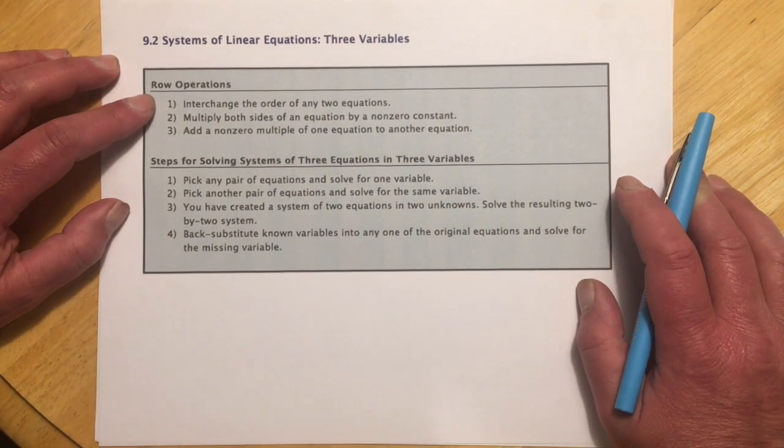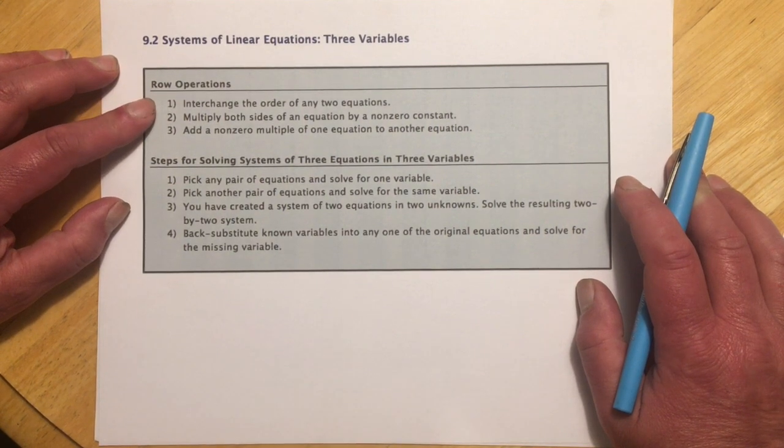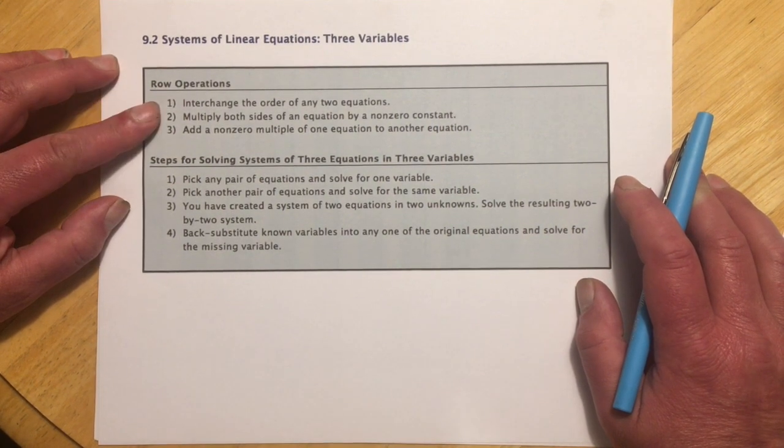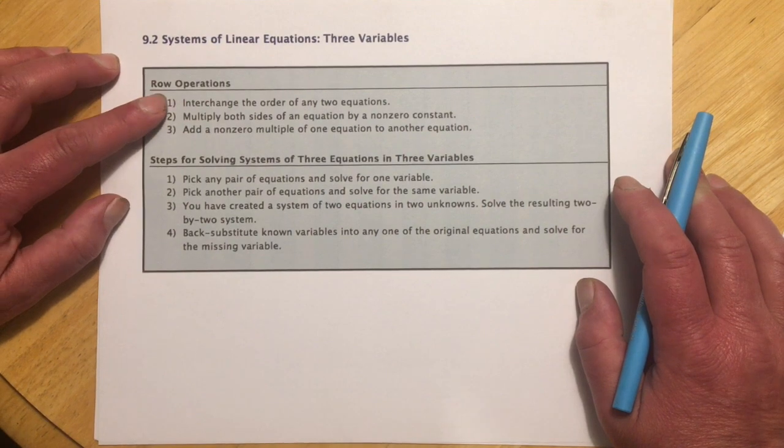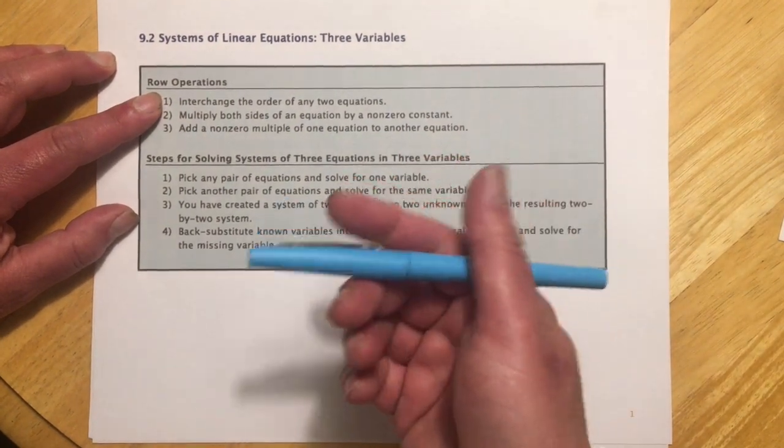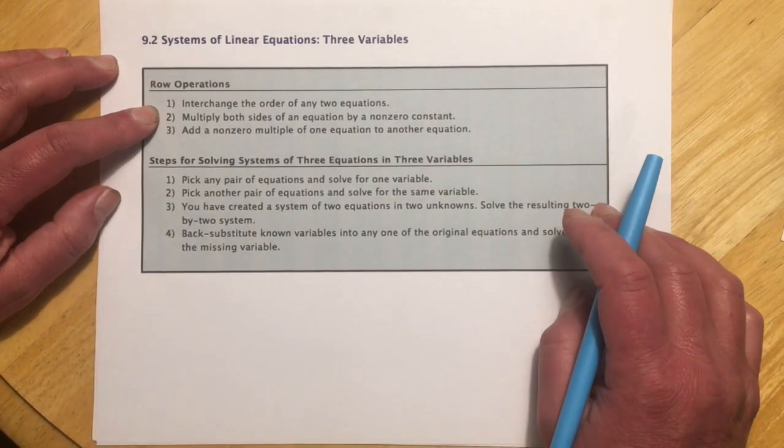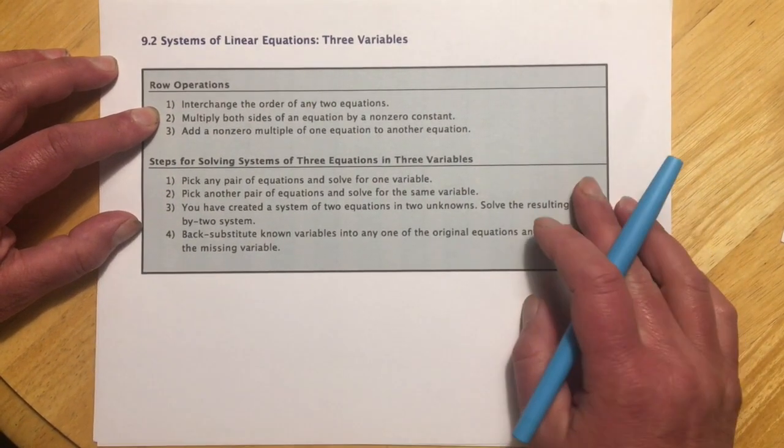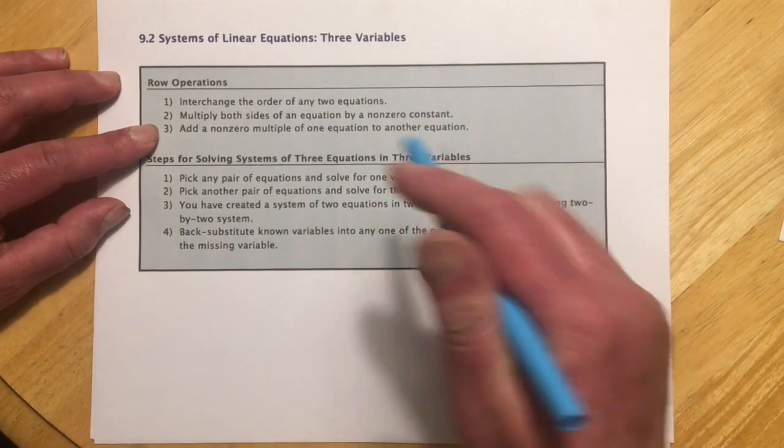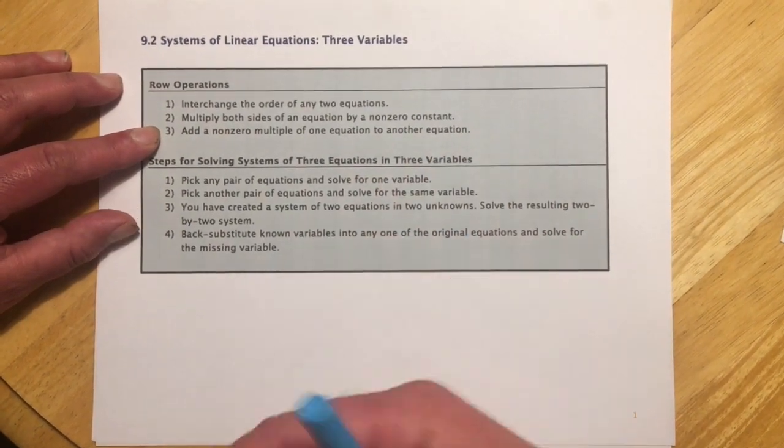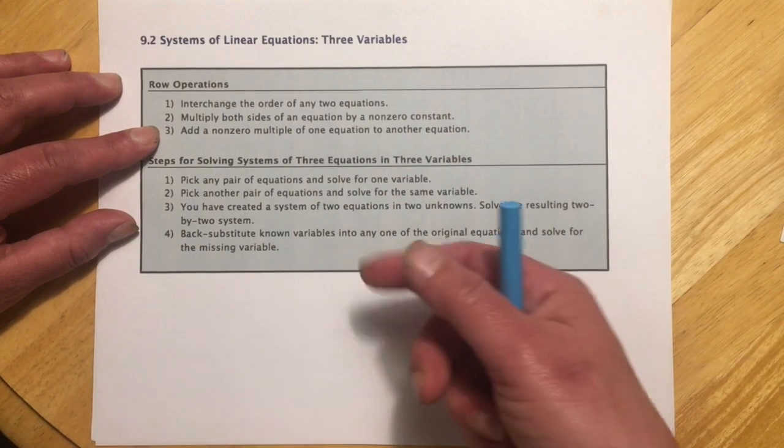Just a reminder of the row operations. Hopefully this is all a review from 98 or 95 or 102. We can interchange any two equations if we find that helpful. We probably won't in this section, but we will a little later in the chapter. We can multiply both sides of an equation by a non-zero constant. And then we can add together any two equations, and we do that to try to eliminate one of the variables.